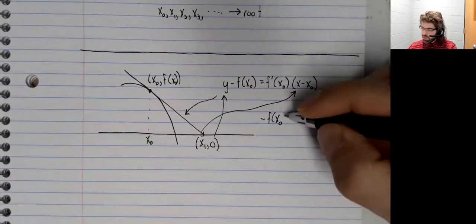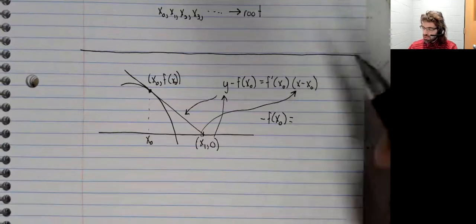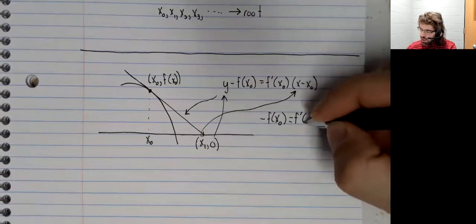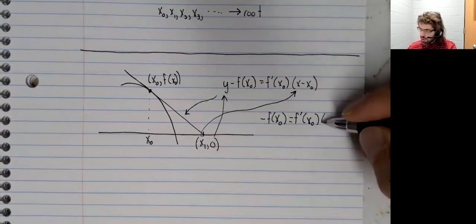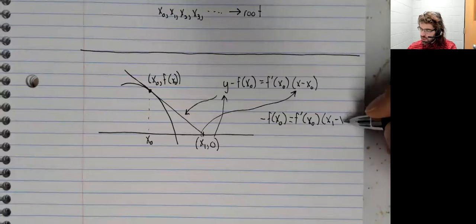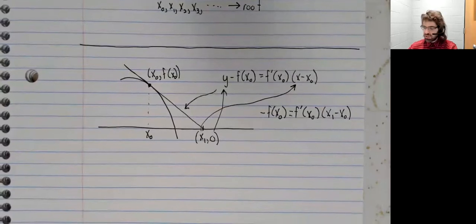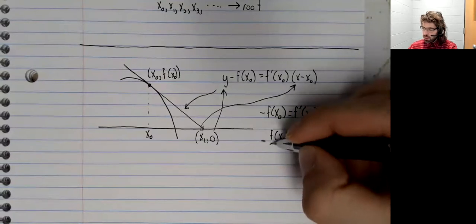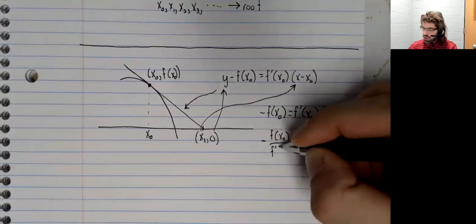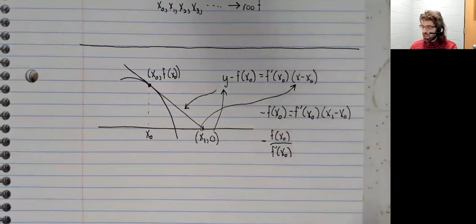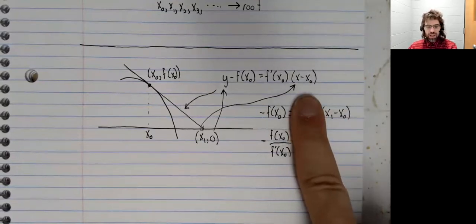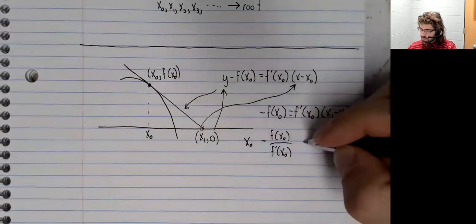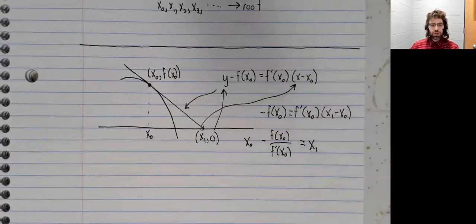We get negative f of X sub 0. This Y is a 0, so it goes away, equals f prime of X sub 0 times X1 minus X sub 0. And now we are going to solve for X1. We'll divide both sides by the derivative to get rid of that. And then we'll add X sub 0. So here's X1.